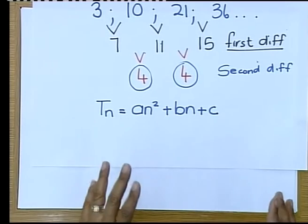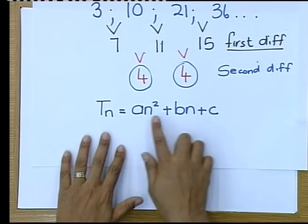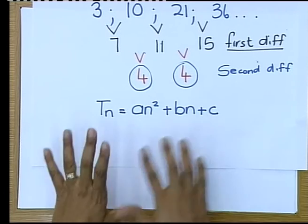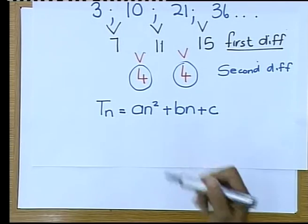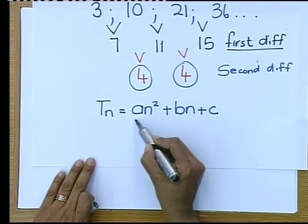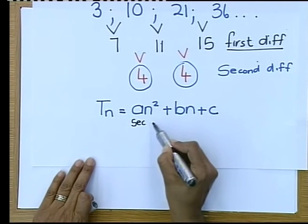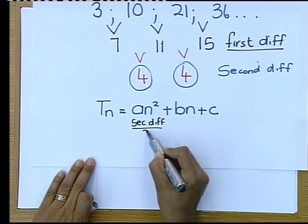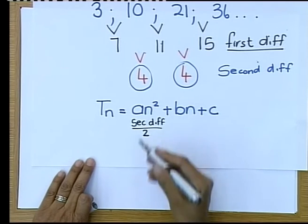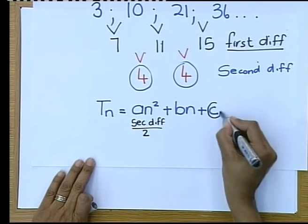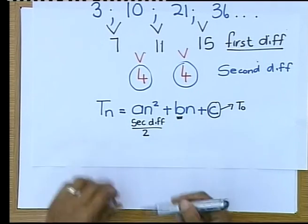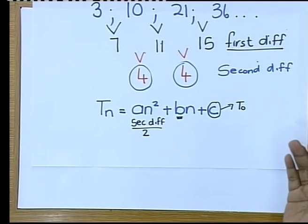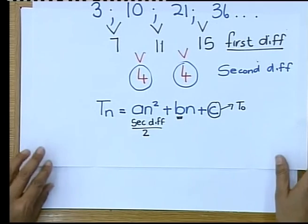Now your teachers explain to you how to get the A, the B and the C. So I don't want to confuse you this afternoon. We also did it on telematics. Just quickly, for those who forgot, remember A is the second difference divided by two. A is the second difference divided by two. C is term number zero. You all know and have different ways of working out B. And that is your number patterns, your APs and your GPs.